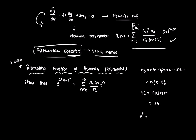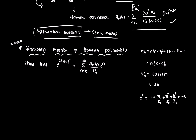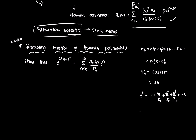Recall the exponential function: e to the power x equals 1 plus x plus x²/2! plus x³/3! and so on to infinity. In sigma notation: e to the power x equals the summation from n = 0 to infinity of x to the power n divided by n factorial.